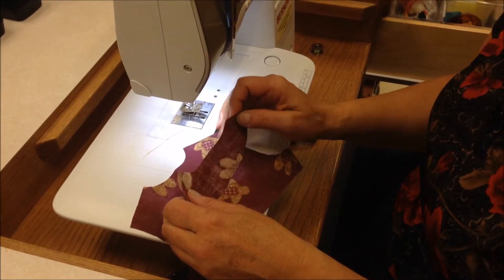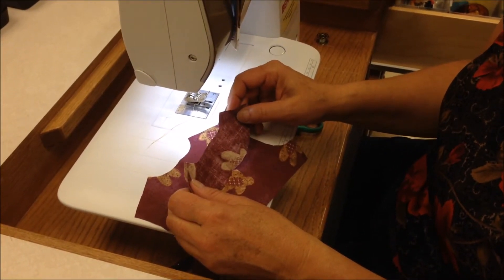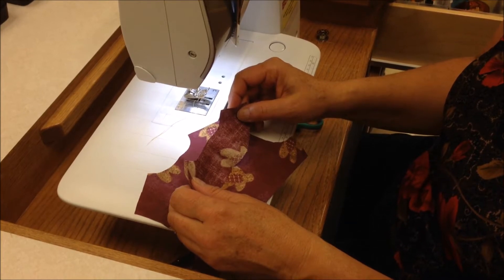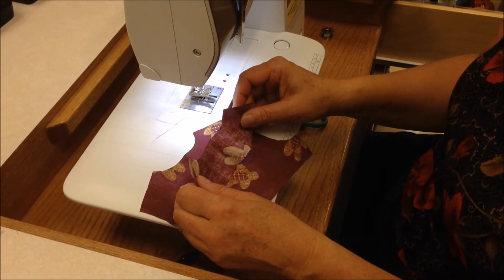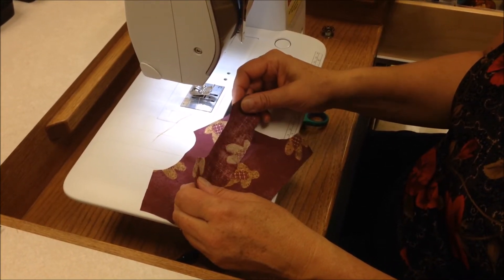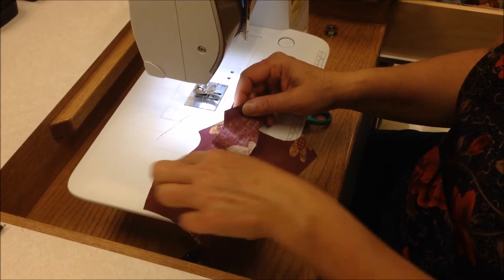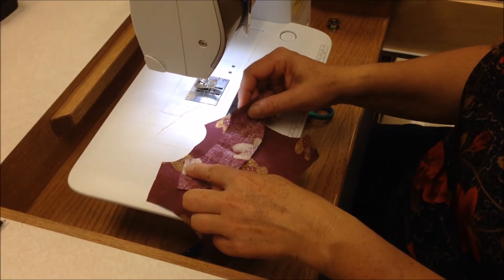This is the clipping technique, and clipping is used on curved seams to allow them to lie smooth. Clips or slits are cut into the seam allowance on concave or inward curves, such as a neckline.